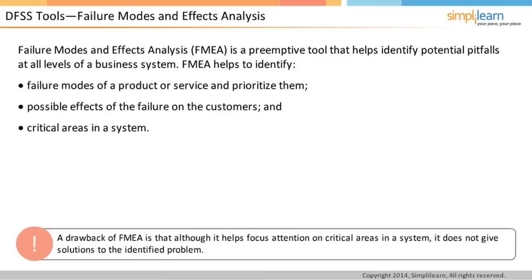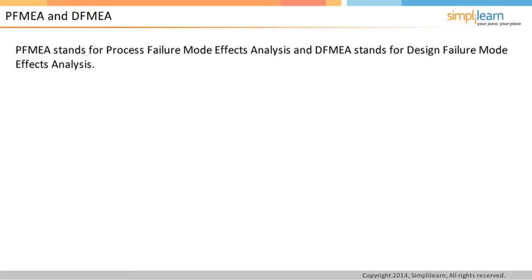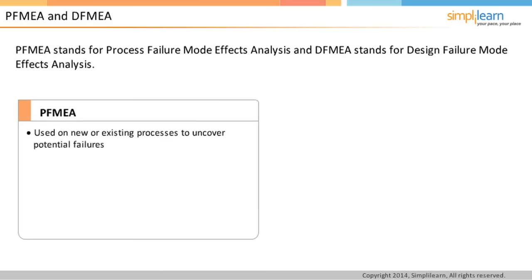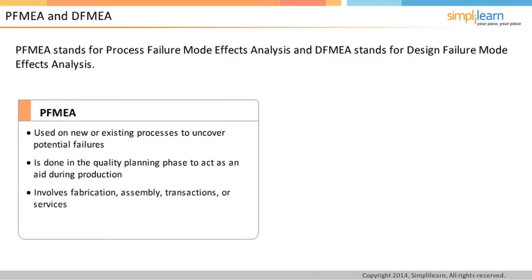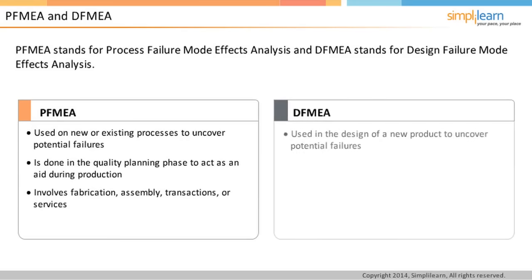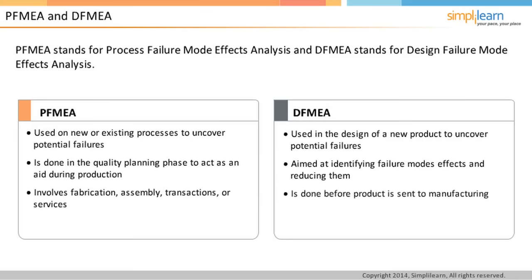PFMEA stands for Process Failure Mode and Effects Analysis and DFMEA stands for Design Failure Mode and Effects Analysis. PFMEA is used on a new or existing process to uncover potential failures in the quality planning phase, and can involve fabrication, assembly, transactions, or services. DFMEA is used in the design of a new product, service, or process to uncover potential failures, finding out how failure modes affect the system and reducing their effect. This is done before the product is sent to manufacturing, and all design deficiencies are sorted out at the end of this process.